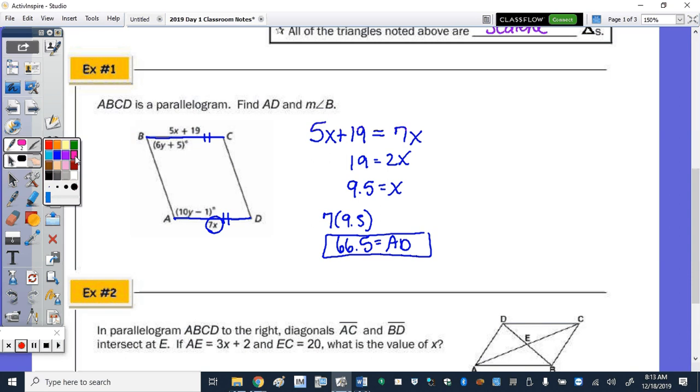Angle B. So in the parallelogram, we're given the measure of angles B and A. B and A are consecutive angles. So that means their measures add up to 180 degrees. So the equation would be 10y minus 1 plus 6y plus 5 equals 180 degrees.